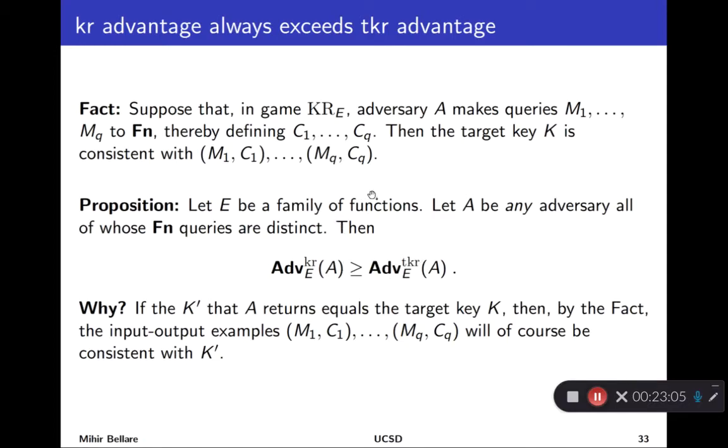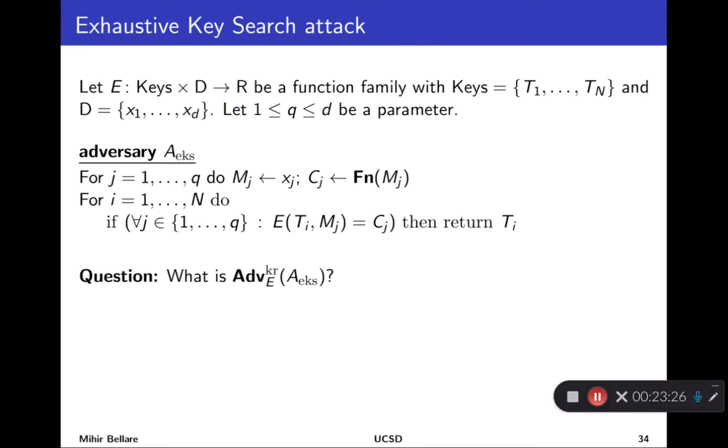And that translates to this. It says, if you have any family of functions and any adversary making some distinct queries to its oracle, run it in the first game, it will have some advantage. Run it in the second game, it will have some advantage. But this number will be always at least as big as this number.